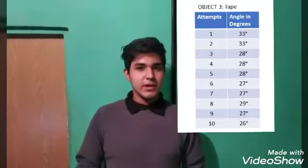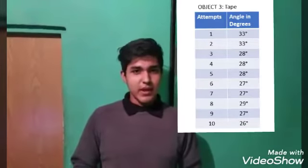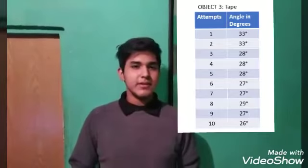And object 3 we got values between 26 and 33 degrees. Then we added all the values in the different objects and then we divided by 10, which is the number of attempts in the experiment.